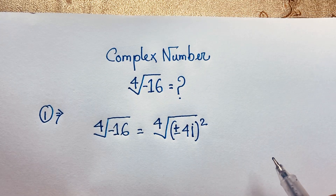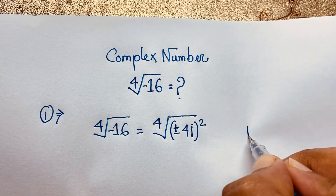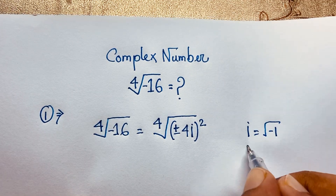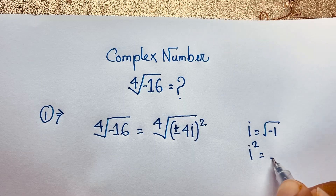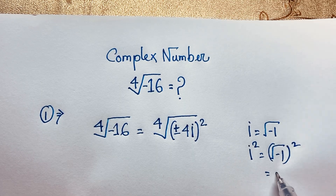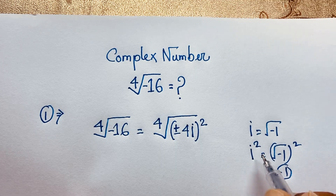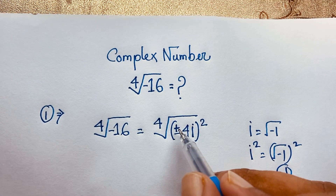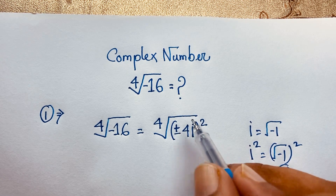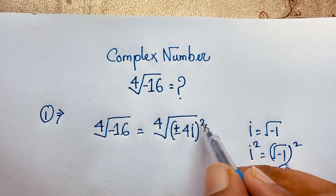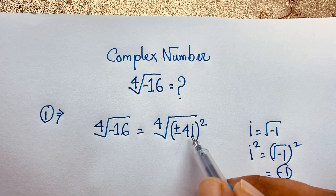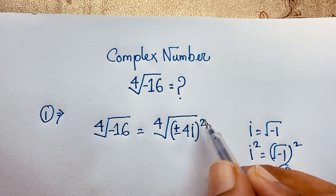But how? You know that i equals square root of negative 1. So if I square both sides, square root of minus 1, squared — the square root cancels and we find negative 1. So negative 1 equals i squared. Now, 4 squared is 16, and i squared is negative 1, so it is negative 16. Therefore plus or minus 4i, whole squared, equals negative 16.